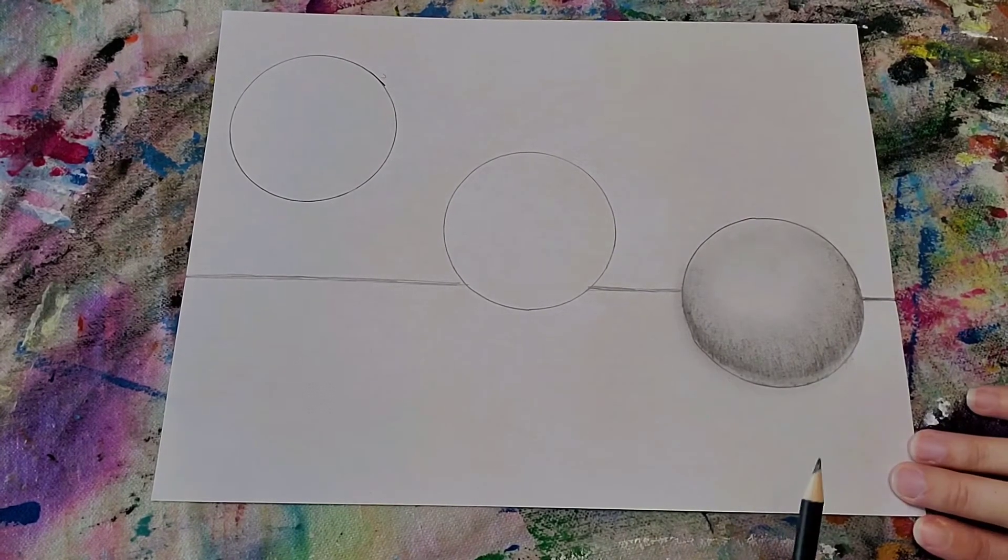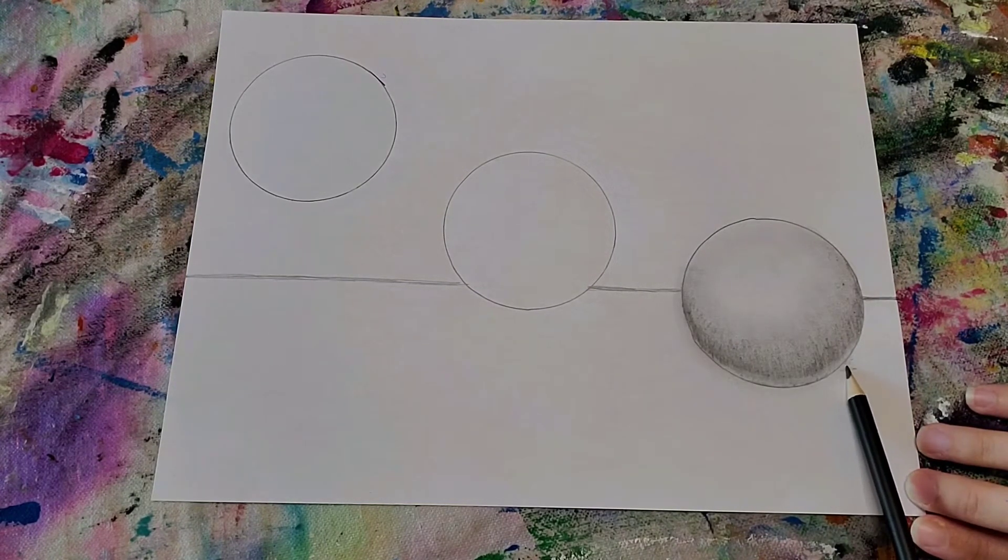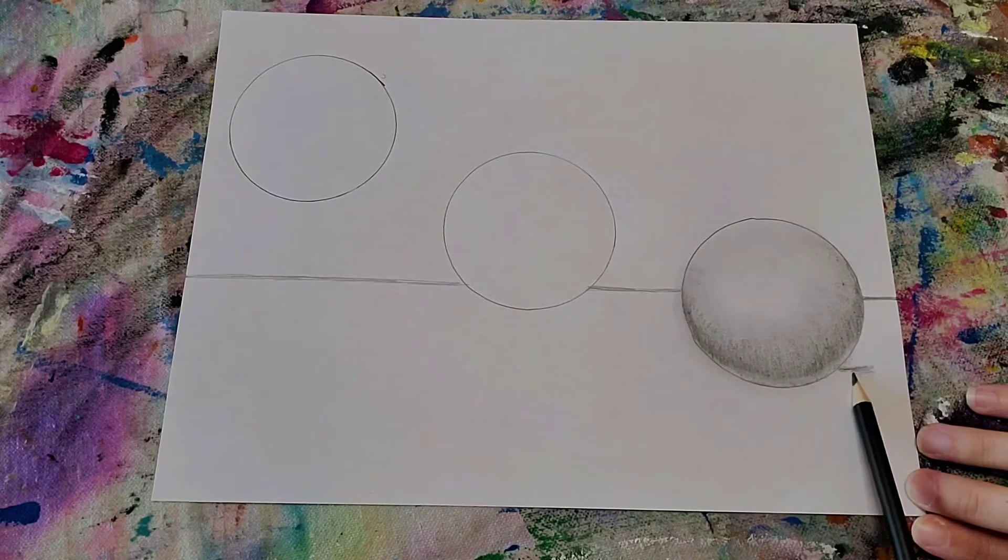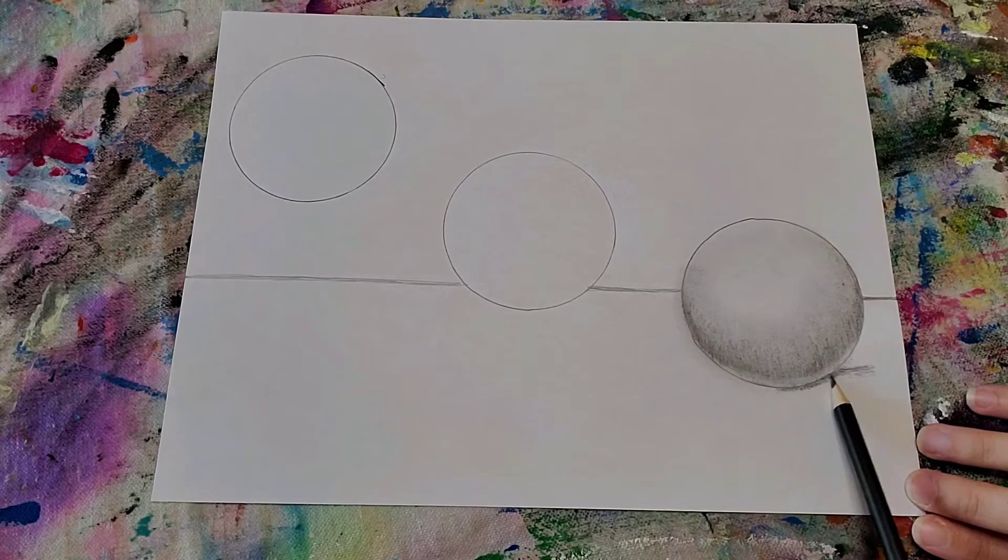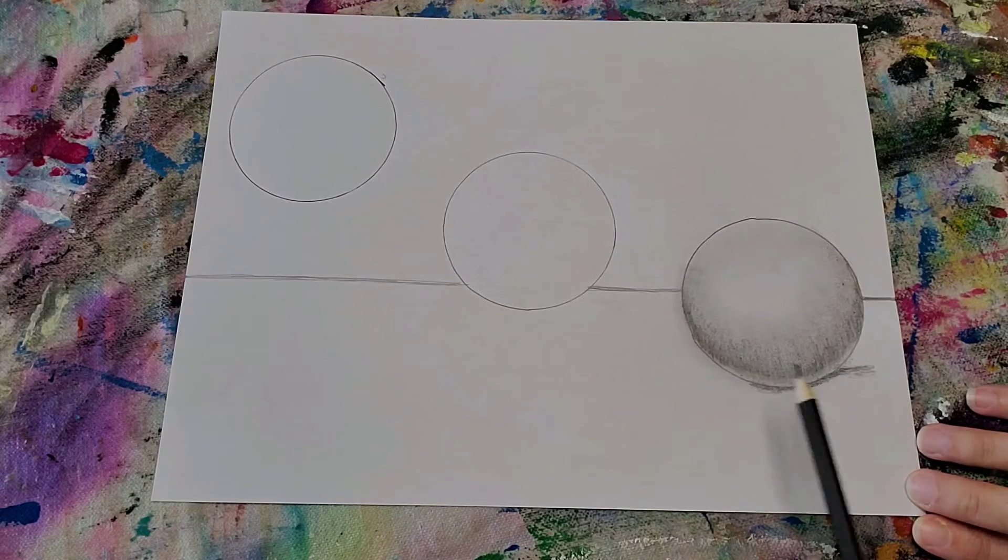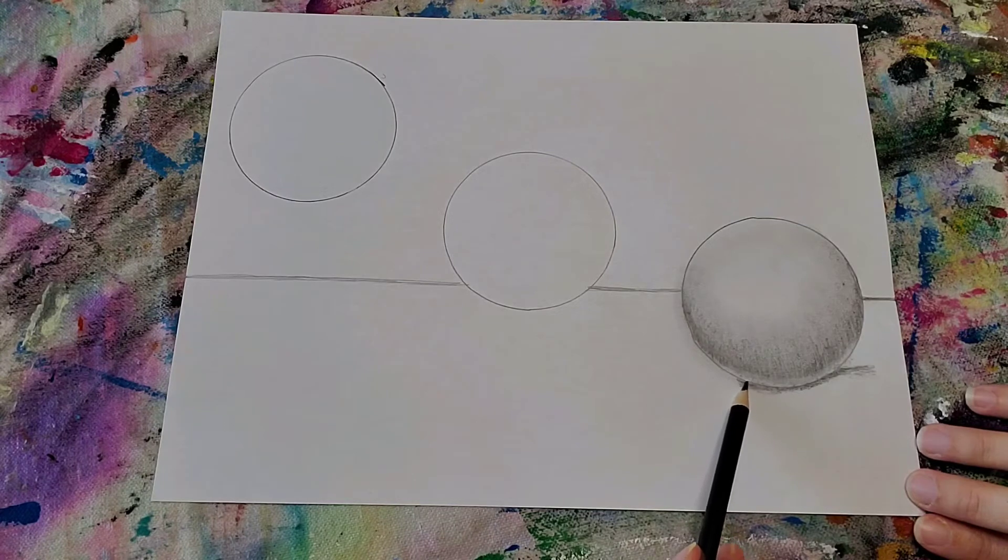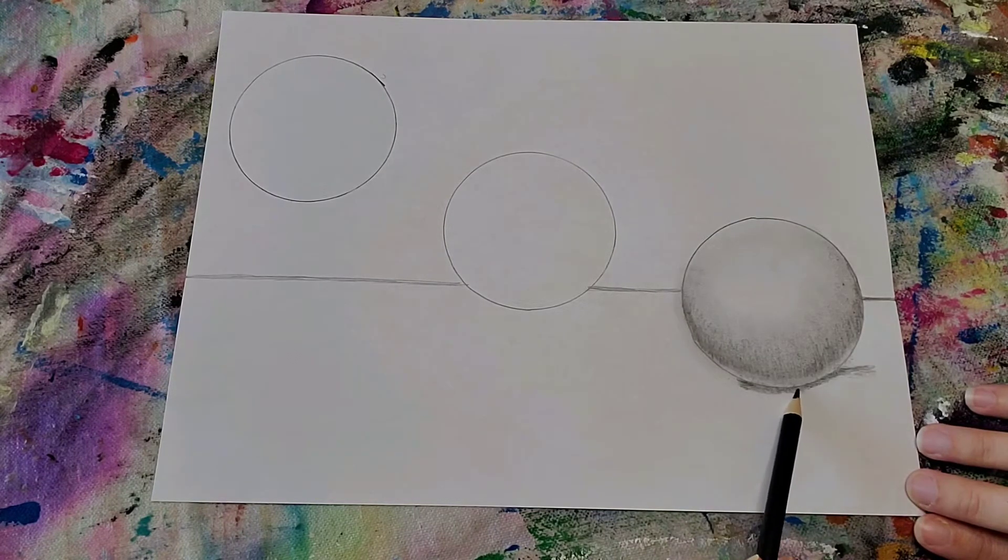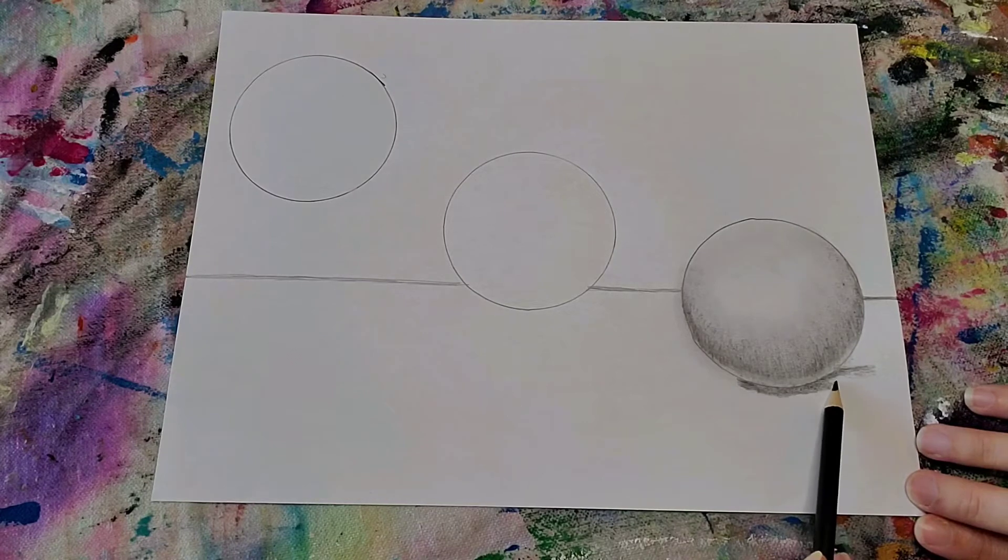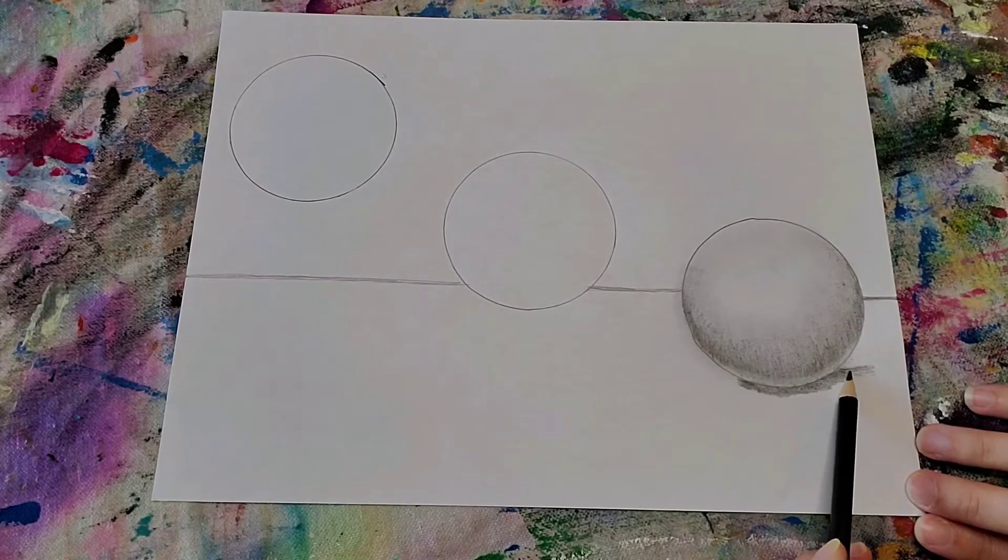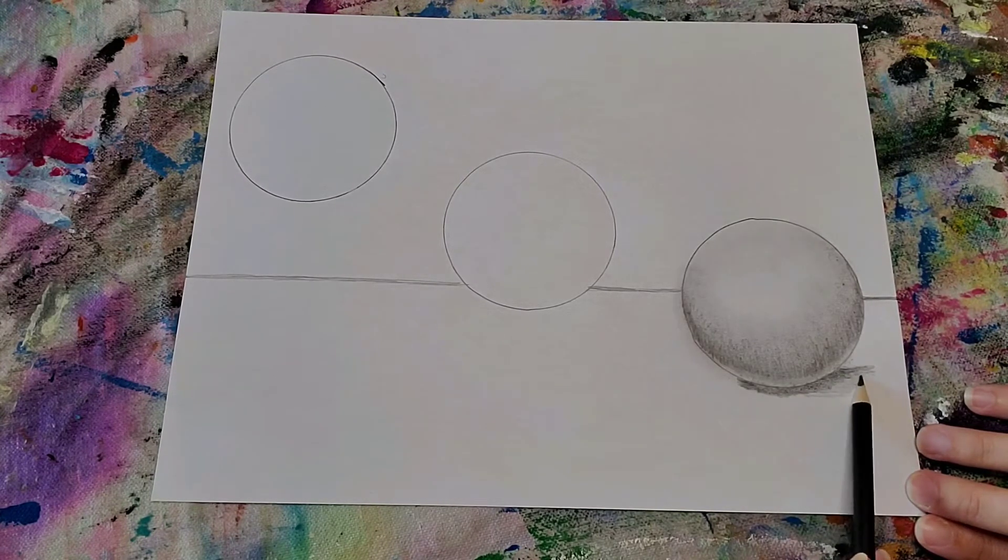All right, and now I'm going to do a shadow. So just underneath here I'm turning my pencil on its side again. We want it really dark where the circle is on the ground. And now I'm going to come out a little bit lighter, I'm not pushing as hard.